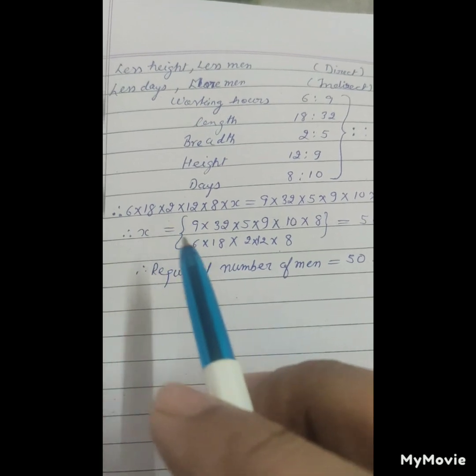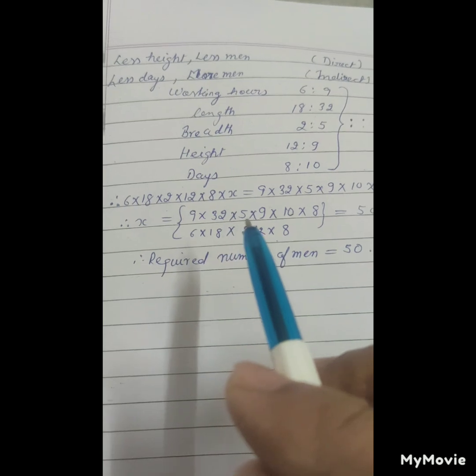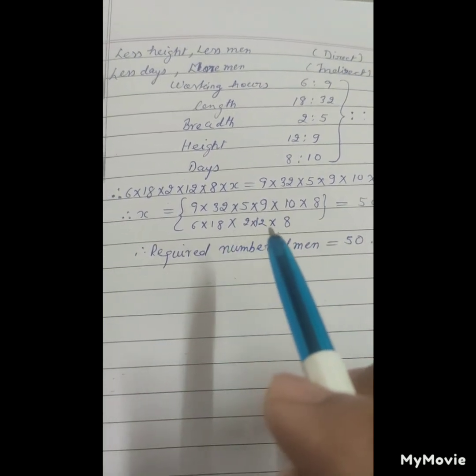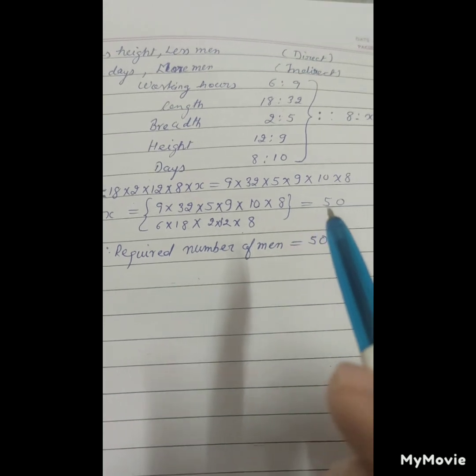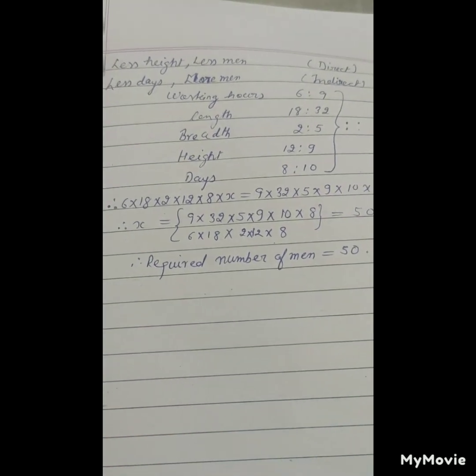So x is equal to 50. The required number of men is 50.